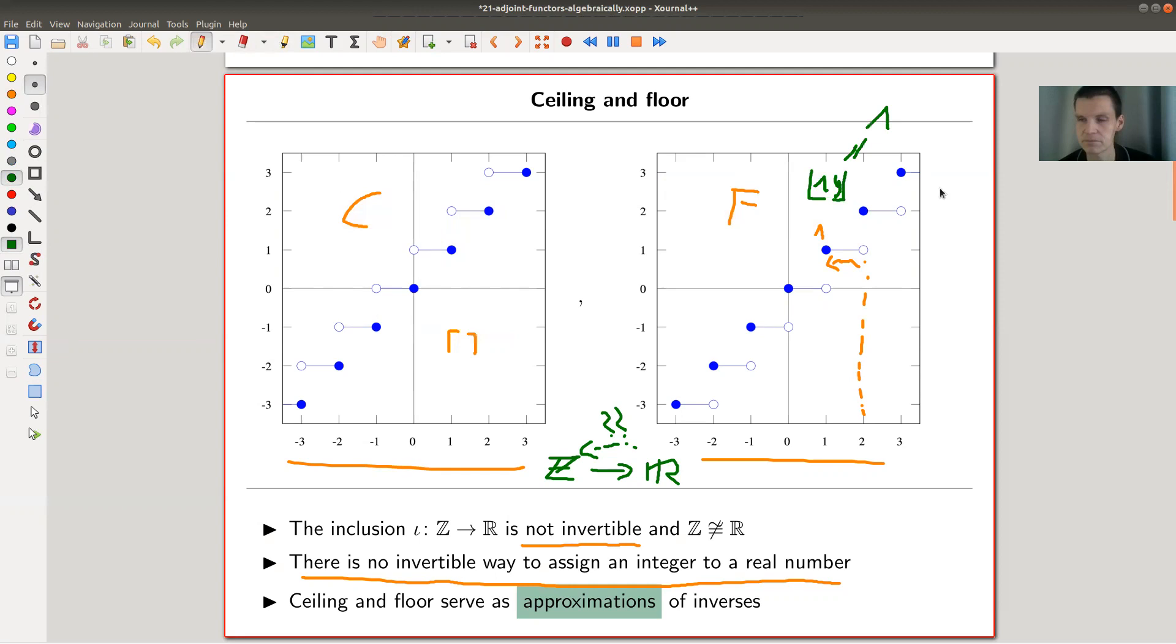It's kind of an approximation to an inverse. You assign to each real number an integer in a very controlled way. And of course ceiling is just the same, just in the opposite direction.